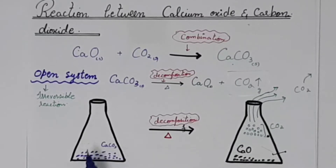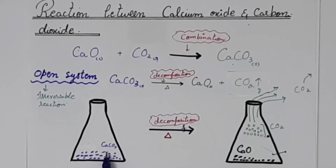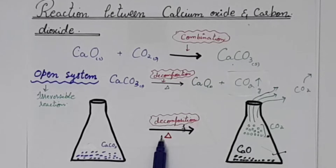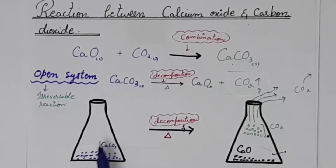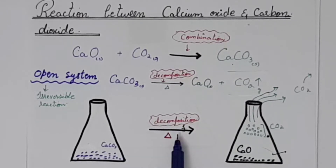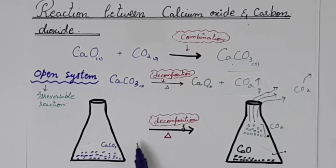Let's start. In an open system, you have a flask. You take calcium carbonate, which is a solid compound, and you apply heat. When you apply the condition of heat, it will start calcium carbonate decomposition — this is the forward reaction.